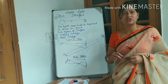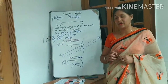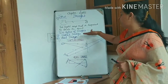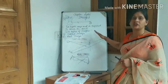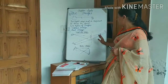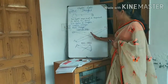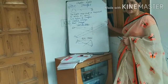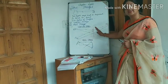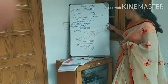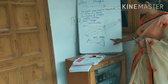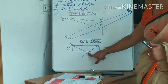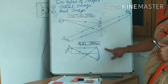The major difference between virtual and real images is that we cannot obtain a virtual image on a screen — in a plane mirror, there is nothing behind the mirror, yet we see the image there. But in the case of a concave mirror, we can obtain the real image on a screen, on the same side as the concave mirror.